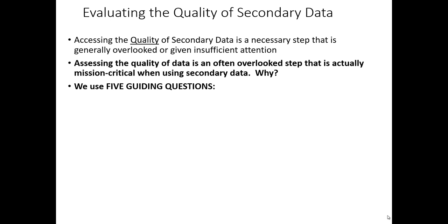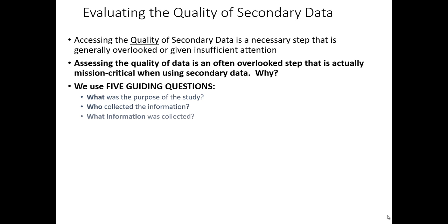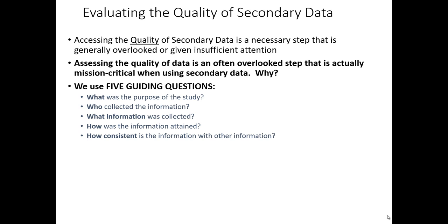There are five overall questions that we usually ask ourselves when evaluating secondary data to make a decision whether or not we can use it for our current research question. First, we need to evaluate what was the purpose of the original study, who collected that information, what particular information they collected, how they actually collected that information, and whether that information from one secondary source is consistent with other secondary data sources.